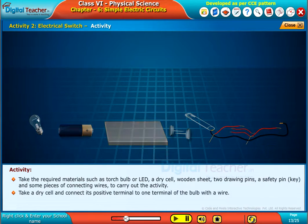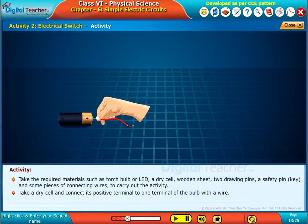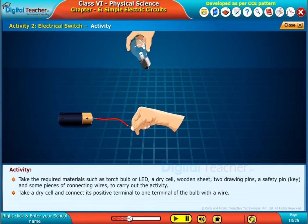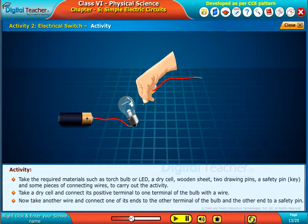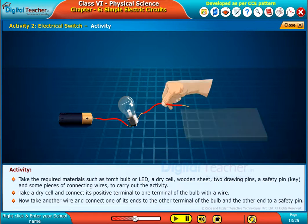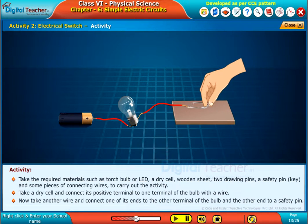Take a dry cell and connect its positive terminal to one terminal of the bulb with a wire. Now, take another wire and connect one of its ends to the other terminal of the bulb and the other end to a safety pin.